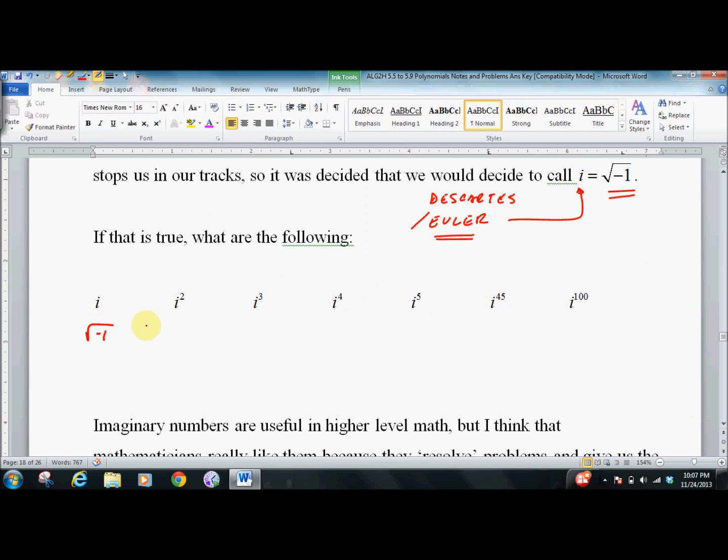If you square it, you get negative 1. If you take it to the third, you're basically saying i squared is negative 1 times i. You get negative i. If you take it to the fourth, you're saying negative 1 times i squared, which is negative 1 times negative 1, which is 1.